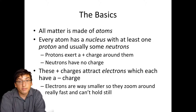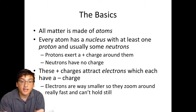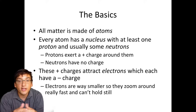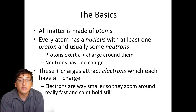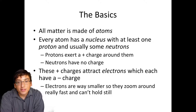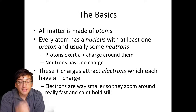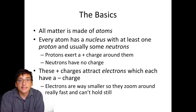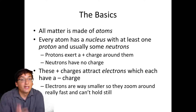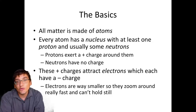Electrons are much, much smaller than protons and neutrons. Protons exude a positive charge and electrons exert a negative charge. When those fields of charge interact with each other, they create a force that pulls the proton and the electron toward each other. Because the electron is so much smaller, the electron is the one that does all the moving — electrons zoom around so quickly they create a kind of cloud of their existence. They actually exist in a kind of wave state — more on that if you ever take quantum physics.